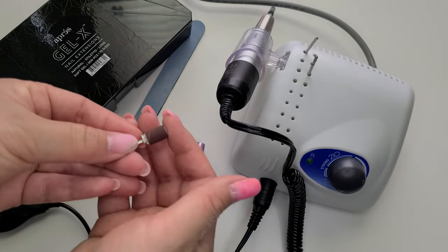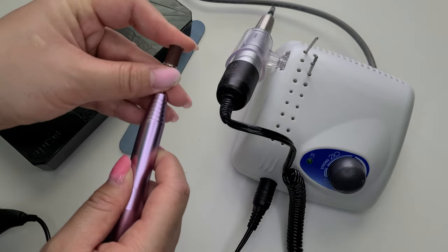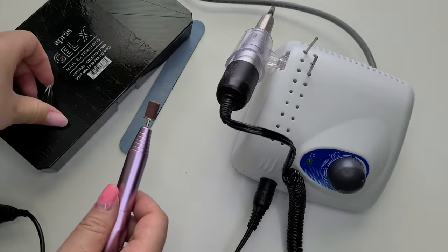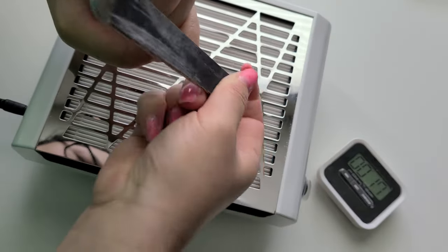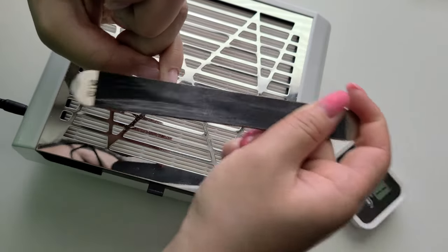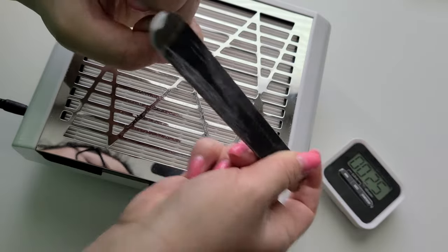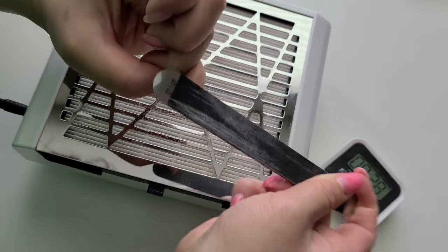I do understand the allure of sanding bands though. They are really easy use and beginner friendly. So if you do decide you want to stick with sanding bands, just buy something that is more professional and the abrasive is higher quality so it doesn't get clogged. Or just stick with a hand file because it's about the same amount of time that it takes you to file.